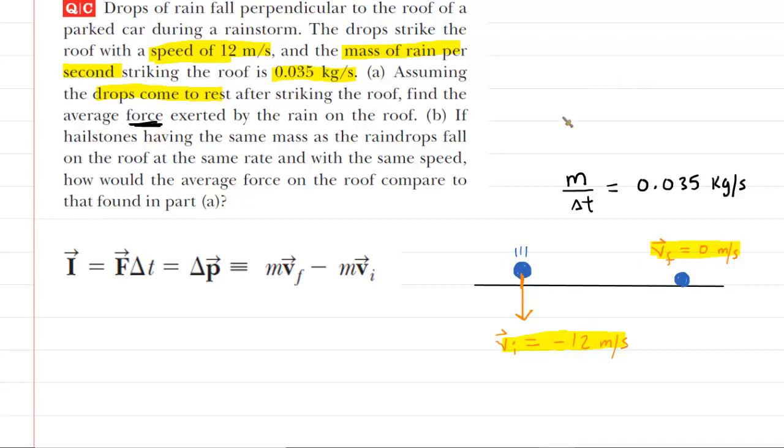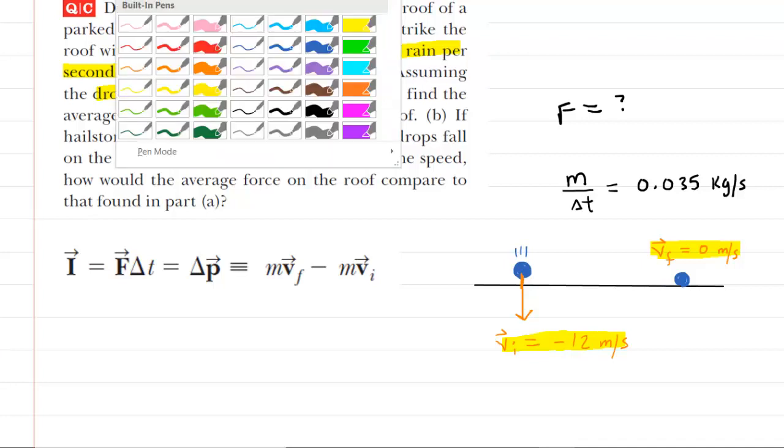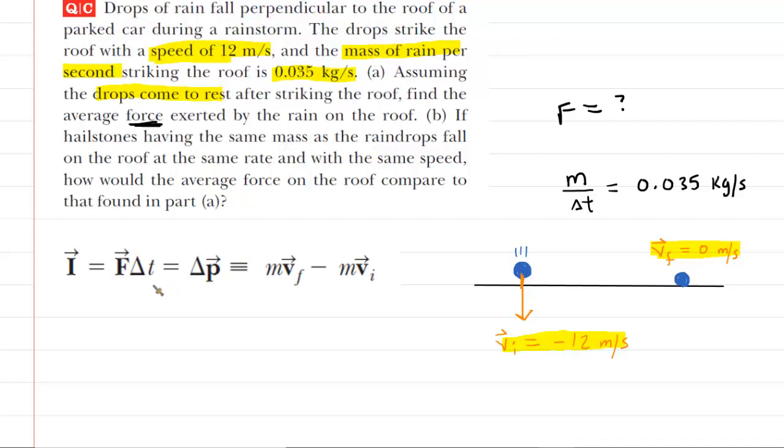Now, because we have all of these quantities as indicated, we're going to look at the impulse momentum theorem as illustrated on the screen right here. And your goal would be to pick the two parts of the equation that capture the knowns and unknown that we're looking for.